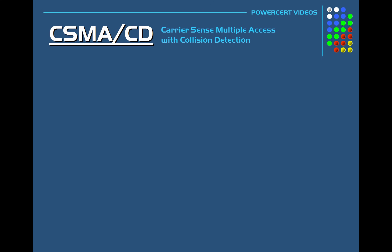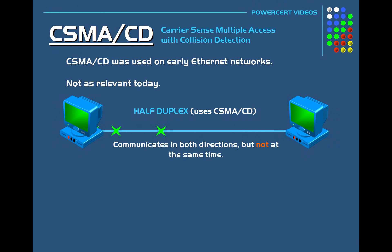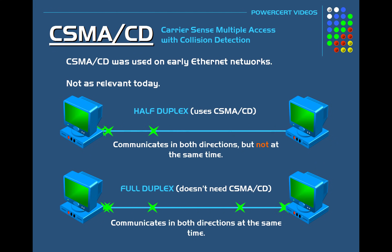CSMA-CD was used on early Ethernet networks and isn't as relevant today due to advancements in network technology. It was only relevant in older half-duplex networks, where data communicates in both directions but not at the same time. Today we use full-duplex networks, where data can communicate in both directions at the same time.